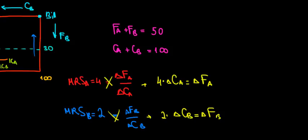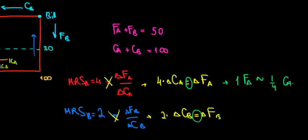This means there's a specific amount of food equivalent to a specific amount of clothing, so the ratios are equal. Suppose N is willing to exchange one unit of food — how much clothing is that worth to N? The change in clothing must be 1/4, because 1/4 times 4 equals 1. So one unit of food is equivalent to just 1/4 unit of clothing for N, because N values clothing more.